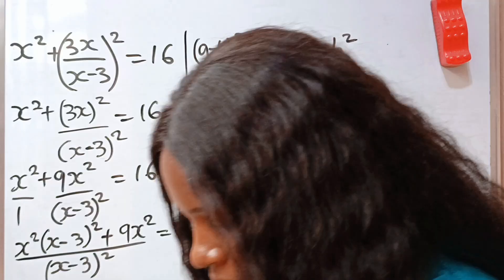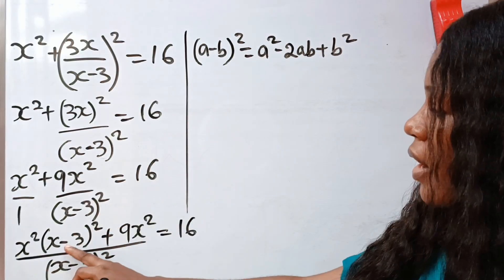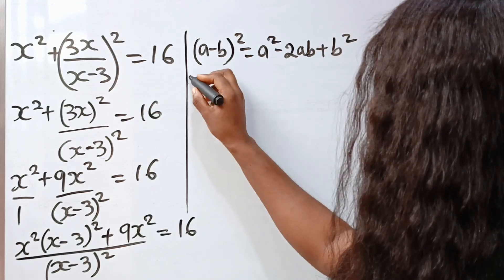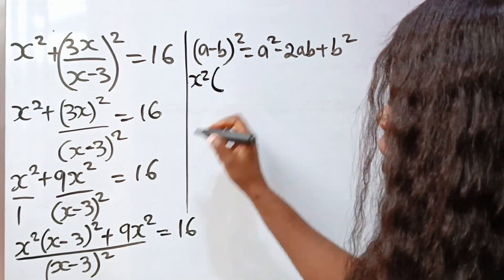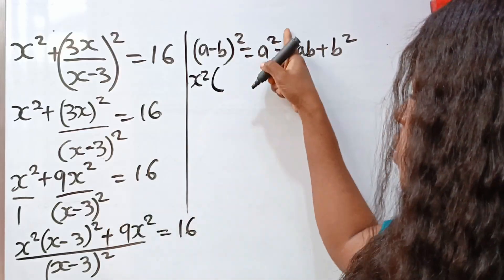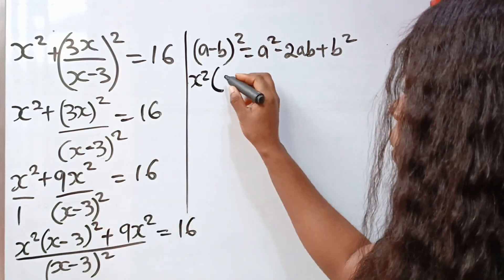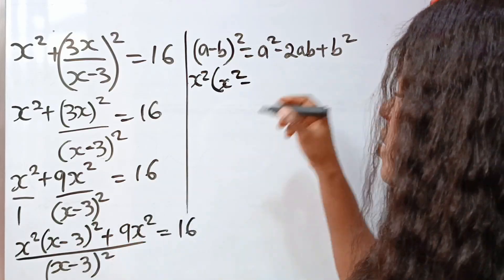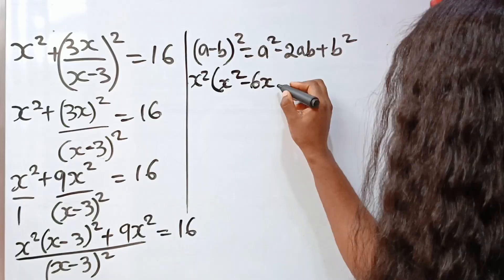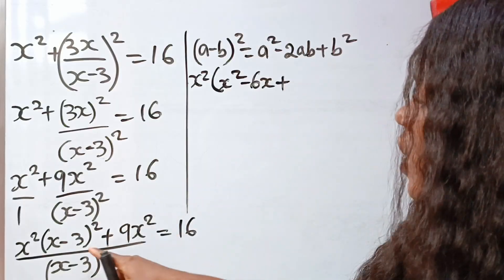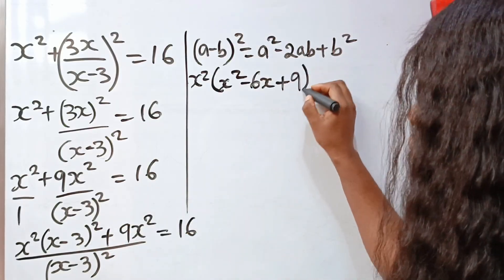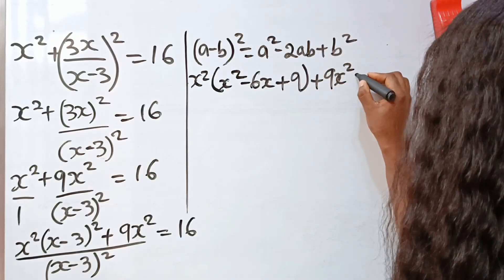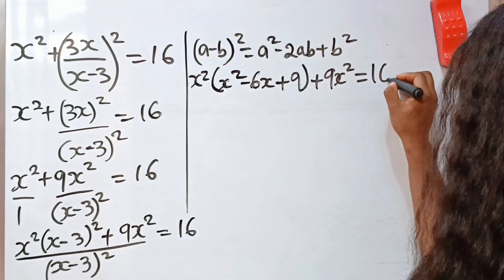Thank you. Now when you open this bracket, we are going to have x squared bracket x squared — that is a squared, that is x squared — minus 2ab, which is 2 times x times 3, which is 6x, plus b squared, plus 3 squared, which is 9. Then plus 9x squared is equal to 16.